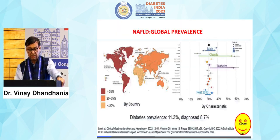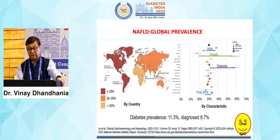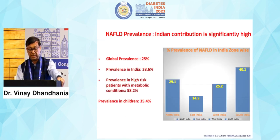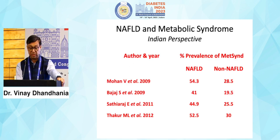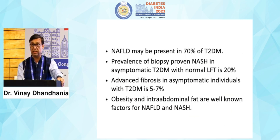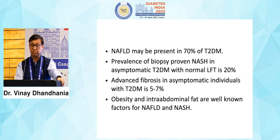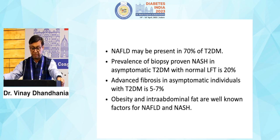NAFLD has global prevalence. In our country, prevalence is almost 20–35%, which is very underrated. In contrast, diabetes prevalence is just 11.3% with diagnosis at 8.7%. Global prevalence is 25%, prevalence in India is almost 40%, prevalence in high-risk patients with metabolic conditions is 58.2%, and prevalence in children is 35.4%. NAFLD may be present in 70% of type 2 diabetics. Prevalence of biopsy-proven NASH in asymptomatic type 2 diabetics with normal LFTs is 20%, and advanced fibrosis in asymptomatic individuals with type 2 diabetes is 5–7%.